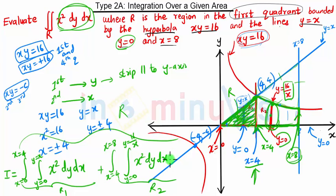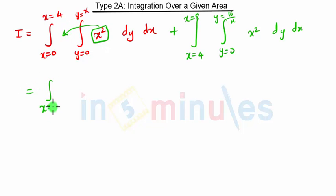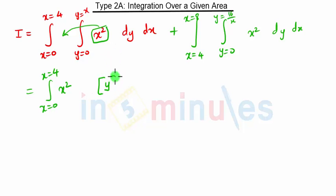This is the new integration we have to perform in region R1 and region R2. We will first integrate with respect to y, then with respect to x. For R1, x squared is constant so we take it outside, giving integration from x equal to 0 to 4 of x squared, and since there is no y term, the integration of dy is simply y, applying the limit y equal to 0 to y equal to x.